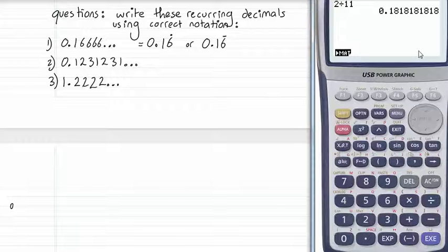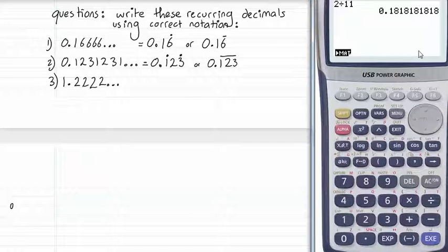Our next example, 0.123123. Here we've got a three-digit repeating pattern. We write the decimal and include one whole copy of the repeating pattern, and we put a dot on the first and last digit of the repeating pattern. Or, of course, 0.123 and a bar over the entire thing. Not the zero, of course, over the one, two, three.